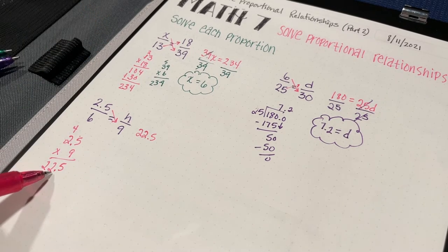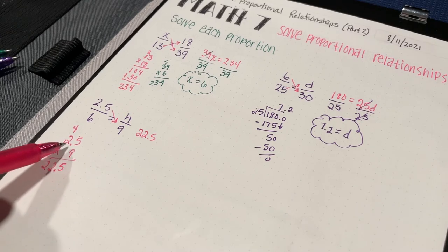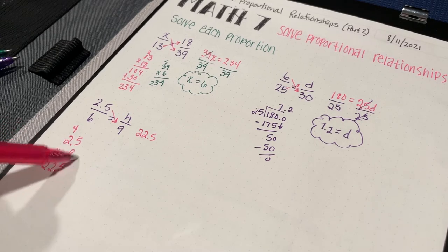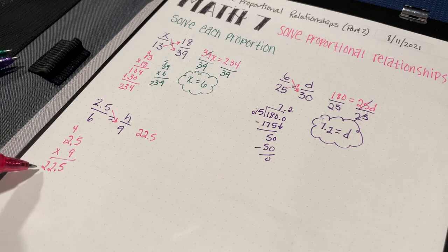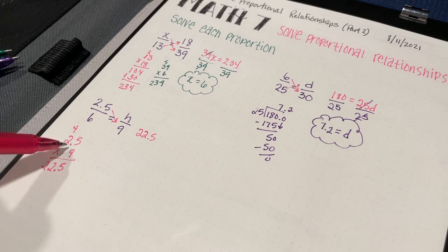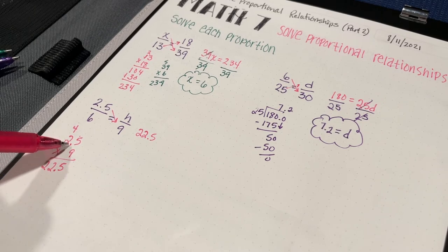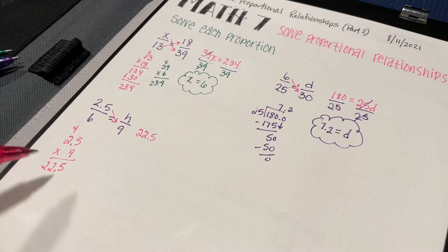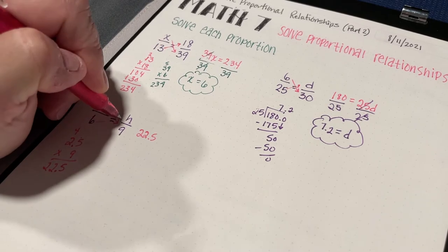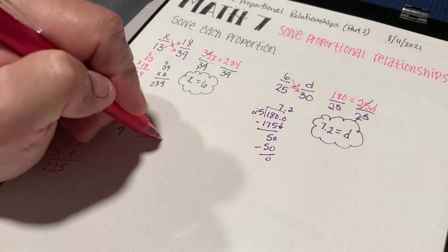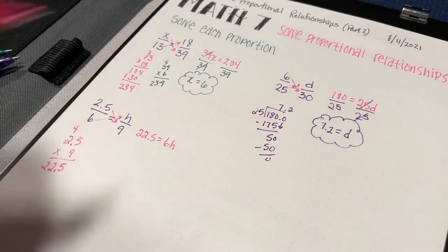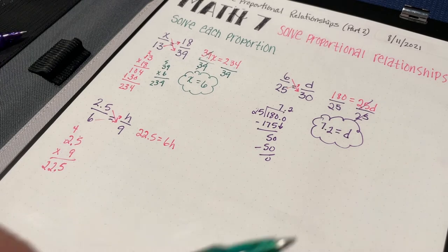How did I know where the decimal place goes? I reasoned that 3 times 9 is 27, but it's going to be less than 27 because 2.5 is less than 3, so the only place that makes sense is there. Then my next cross product is 6 times h, giving me 6h.